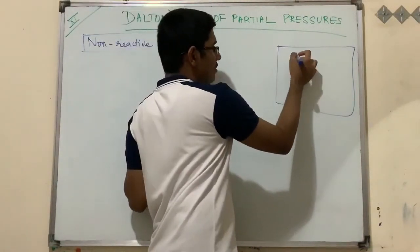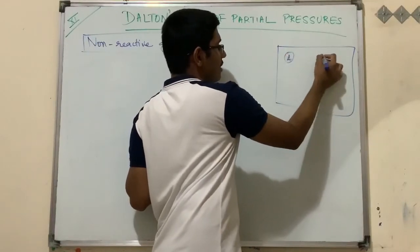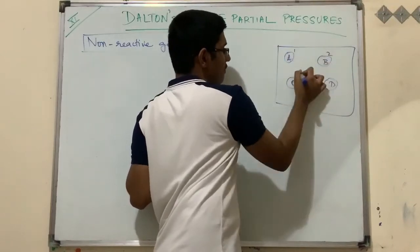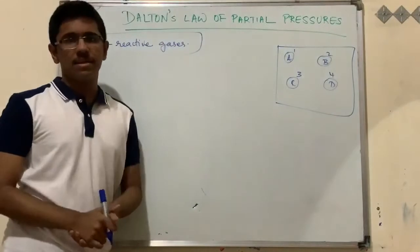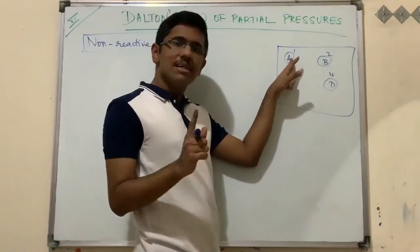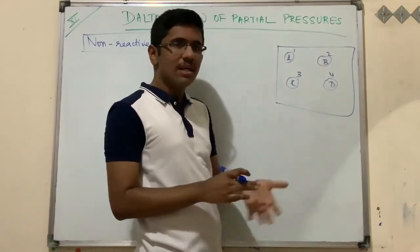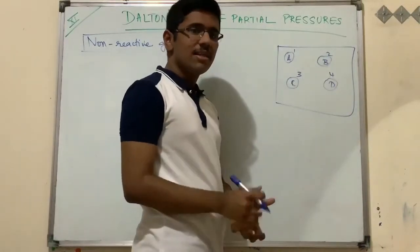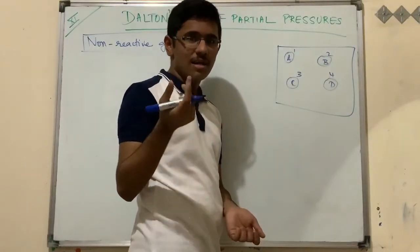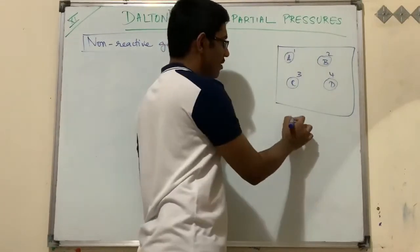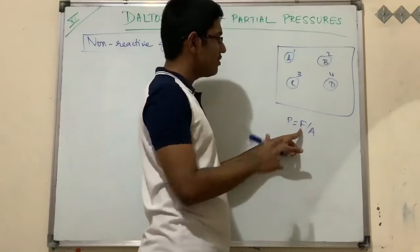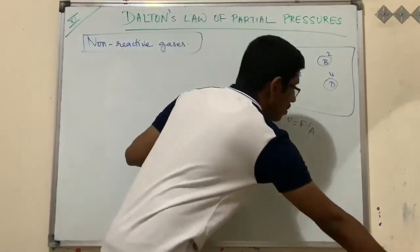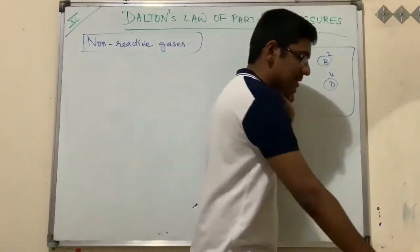Inside the container, gas molecules of type A, B, C, D — many different types — are present. Gas A exerts a pressure because the molecules are continuously hitting the walls of the container in a zigzag, random motion. They hit with a particular momentum and force, and since pressure equals force per unit area, they exert pressure on the walls.